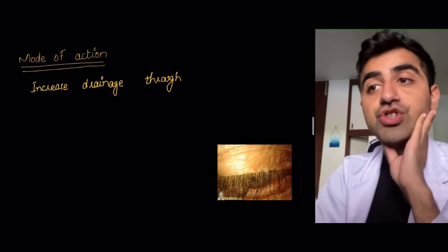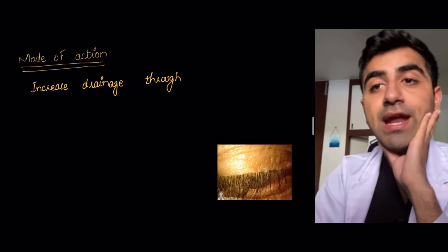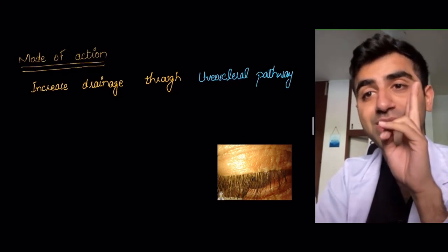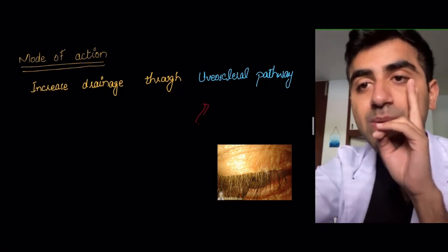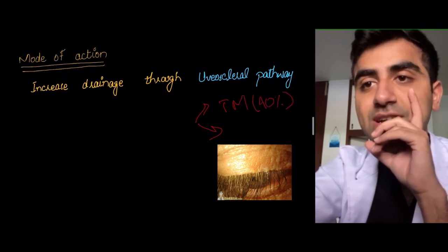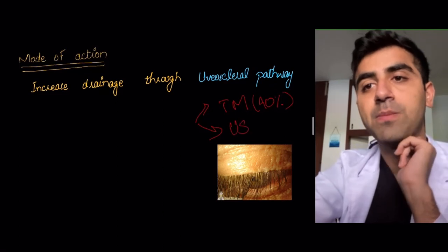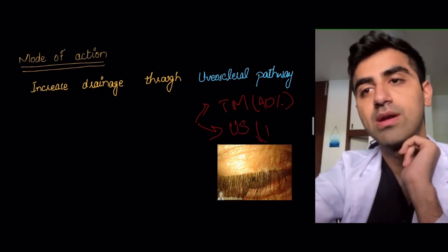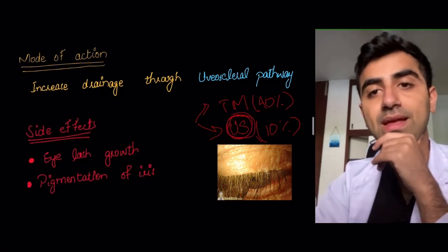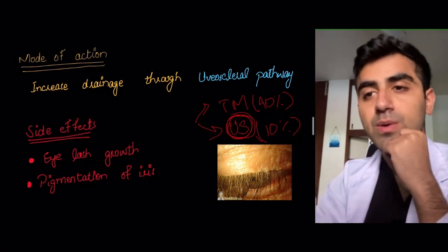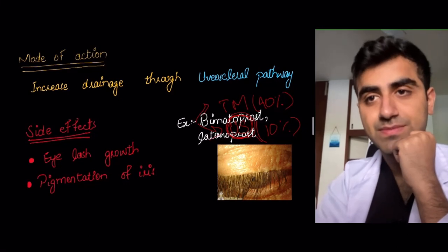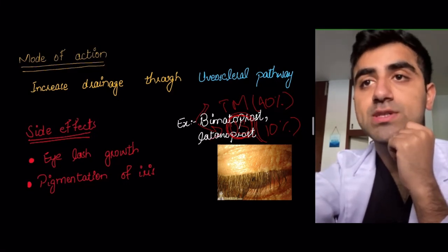Prostaglandins increase drainage through the uveoscleral pathway. Remember there are two drainage pathways: the trabecular meshwork responsible for about 90%, and the uveoscleral pathway responsible for about 10%. Prostaglandins act on the uveoscleral pathway. Side effects include eyelash growth and pigmentation of the iris. Examples include bimatoprost and latanoprost.